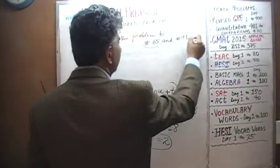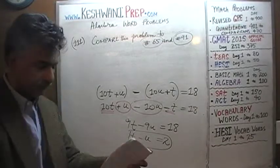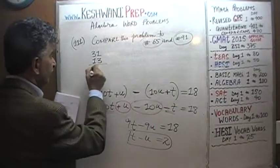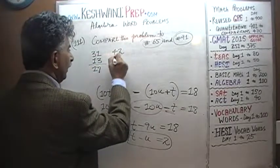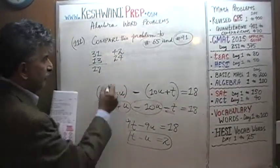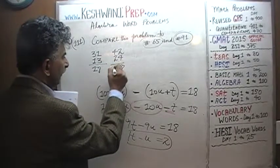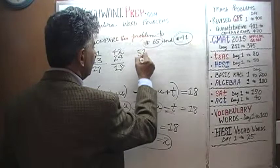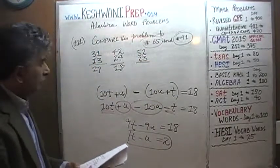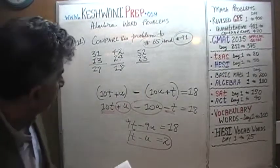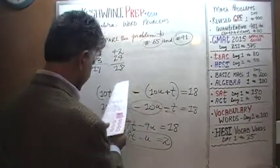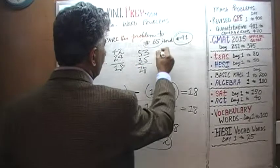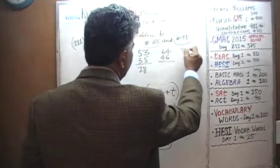Make sure you watch problems 65 and 91 if you have not done so. The difference is 2. If the difference is 2, we can have 31 and 13 — the difference is 18 when reversed. Or we can have 42 and 24, or 53 and 35 — the difference is again 18. Or we can have 64 and 46, or 75 and 57, or 86 and 68, or 97 and 79. All of these are valid scenarios.